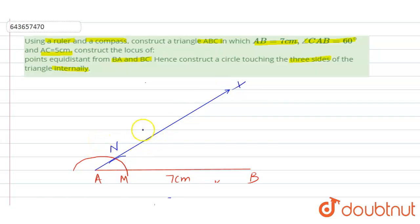as center and radius equal to 5 centimeter, draw an arc cutting AX at C. So we open the compass for 5 centimeter and draw the arc, that is point C. Then next step, I think 5 centimeters here, okay.